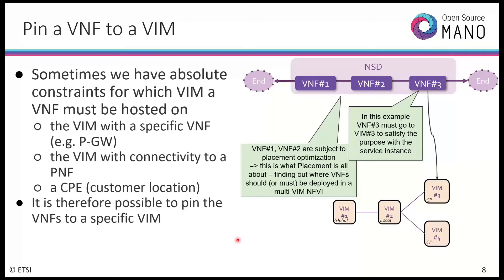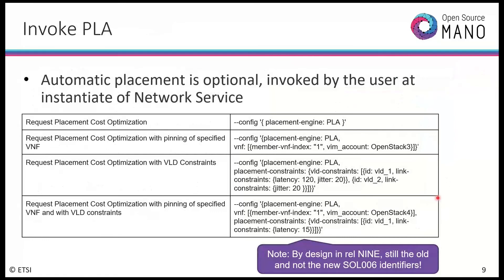Sometimes we have absolute constraints for which VIM a VNF must be hosted on. For instance, in a network service with three VNFs, one VNF must go to VIM number three because it has to be associated with a VIM that has specific connectivity — for example, to a packet gateway, a PNF, or a customer location. This follows the standard way of doing VIM pinning in OSM when using the NS create command, and this feature is optional — invoked by the user at instantiation time.